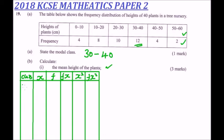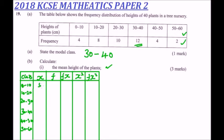Our classes are: 0 to 10, 10 to 20, 20 to 30, 30 to 40, 40 to 50, and 50 to 60. The corresponding midpoints are: 5, 15, 25, 35, 45, and 55.